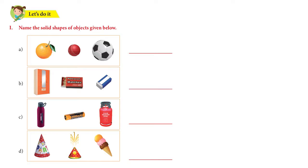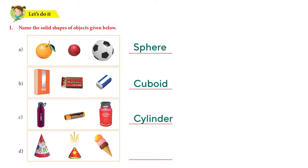Let's try the first one — name the solid shapes of the objects given below. This is on page 81. Here we have an orange, a cricket ball, and a football. What shape do you think they are? They are a sphere. That's correct. Now we have a cupboard, a matchstick box, and a razor like what I showed you. So what shape are they? The solid shape is a cuboid. Now we have a bottle, a battery, and a gas cylinder — so that's why we call it a cylinder, because it's in a cylindrical shape.